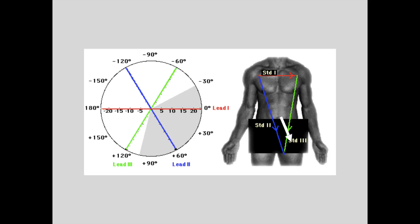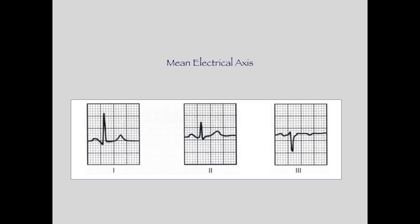We use a vector analysis in order to do that. The mean electrical axis represents the average direction of current flow throughout the QRS complex, which you will remember is ventricular depolarization.